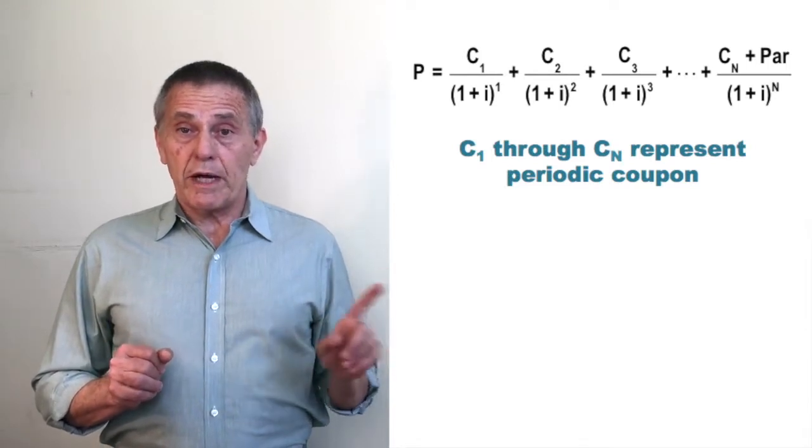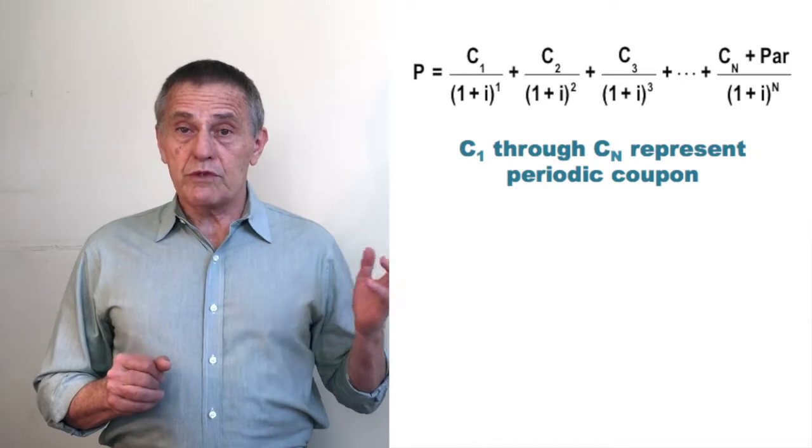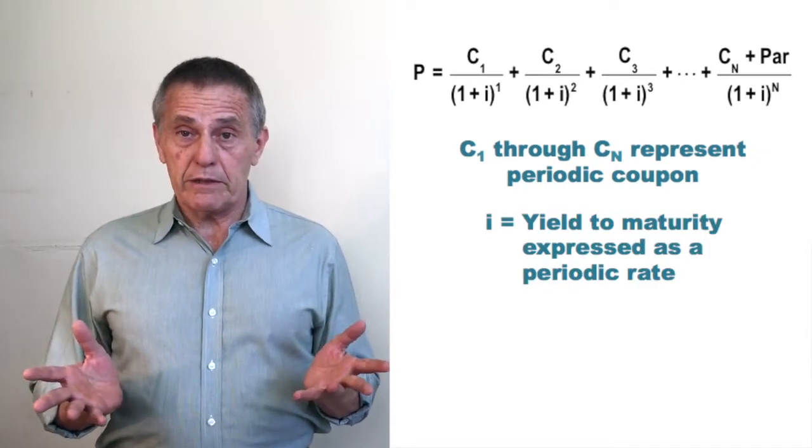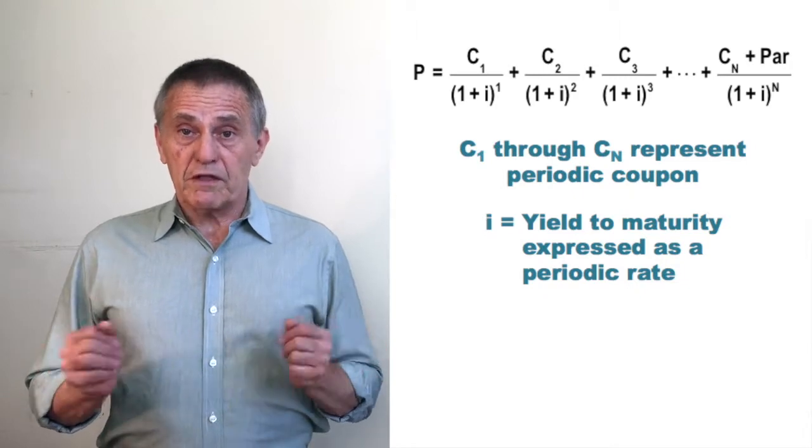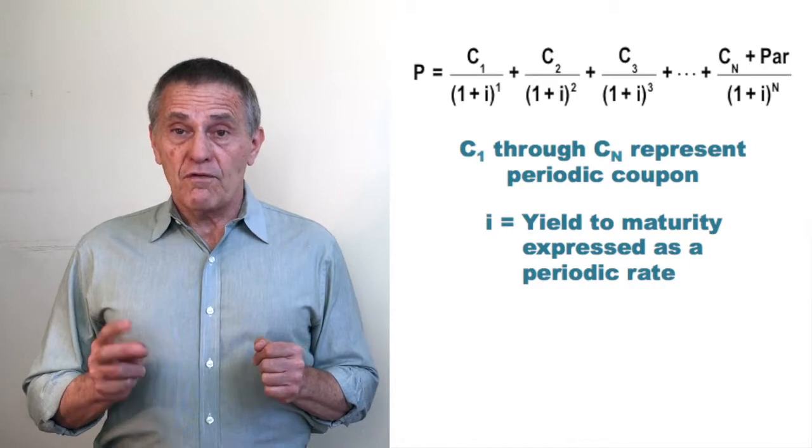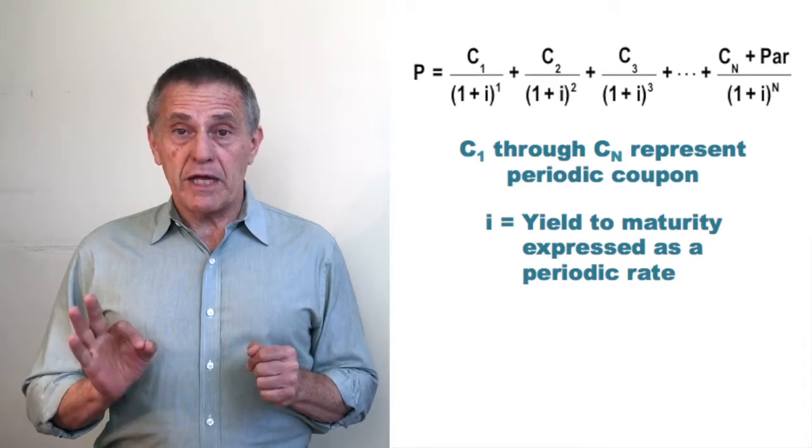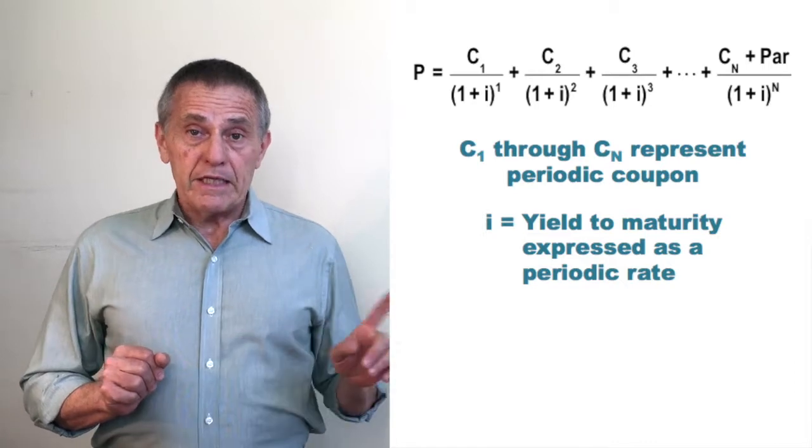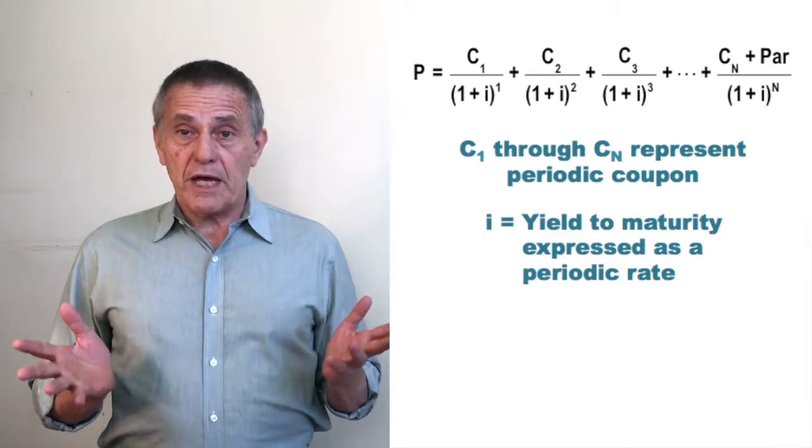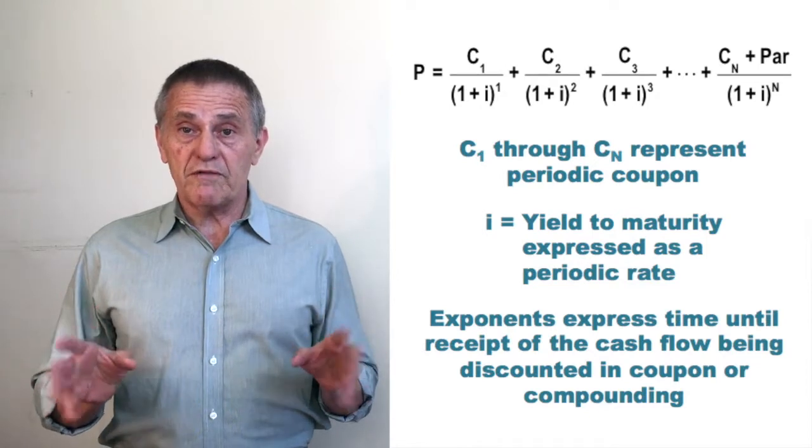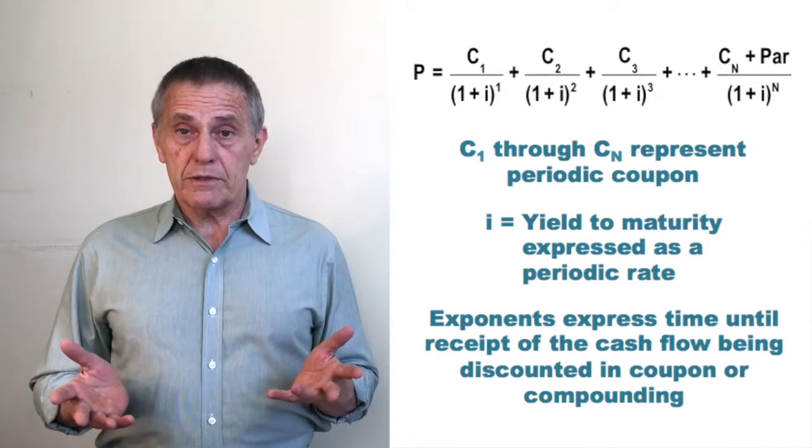The denominators on the right-hand side are 1 plus i raised to a power where i reflects the yield to maturity expressed as a periodic rate. So given the convention for expressing yields to do so on an annual basis, for a semi-annual pay bond, you take that yield to maturity and divide by 2. And each of the divisors, each of the 1 plus i's is raised to a power that reflects the amount of time until the receipt of that contractual cash flow in coupon periods.